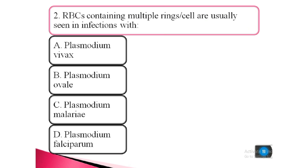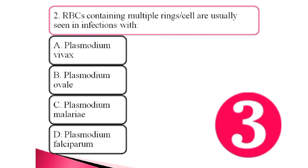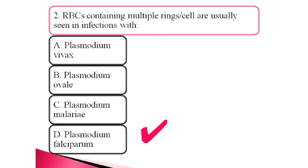Question 2. Red blood cells containing multiple rings per cell are usually seen in infection with: a. Plasmodium vivax, b. Plasmodium ovale, c. Plasmodium malariae, d. Plasmodium falciparum. The answer is Plasmodium falciparum.